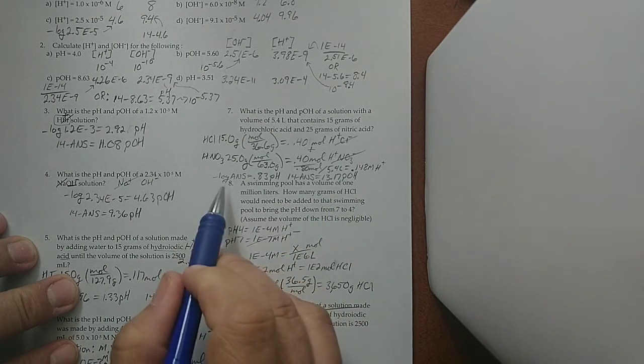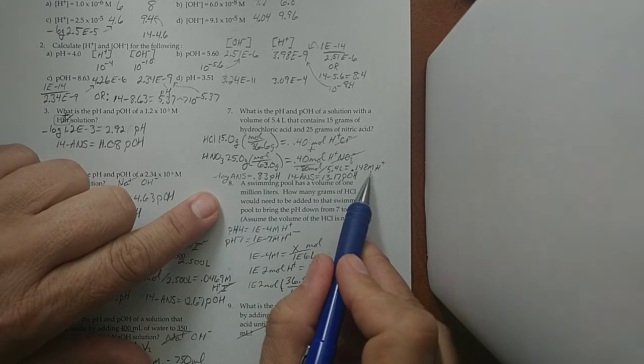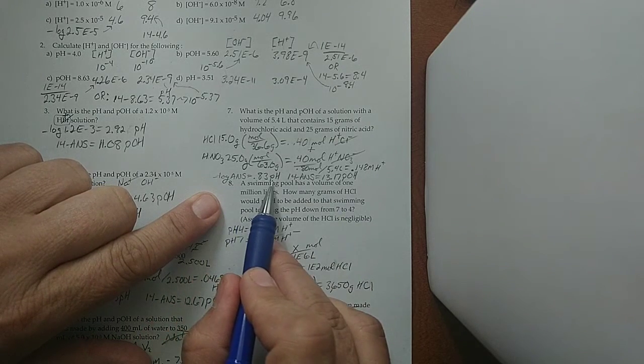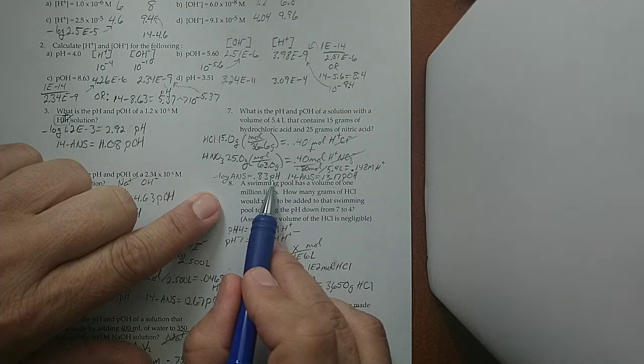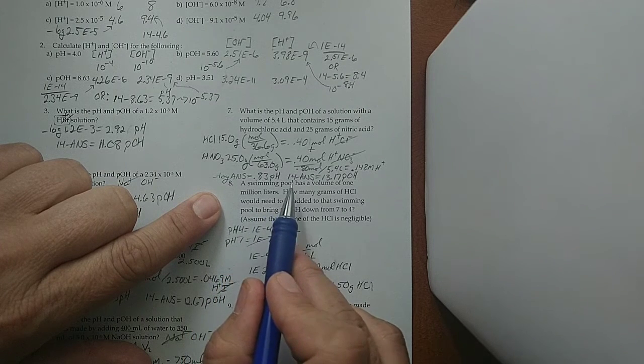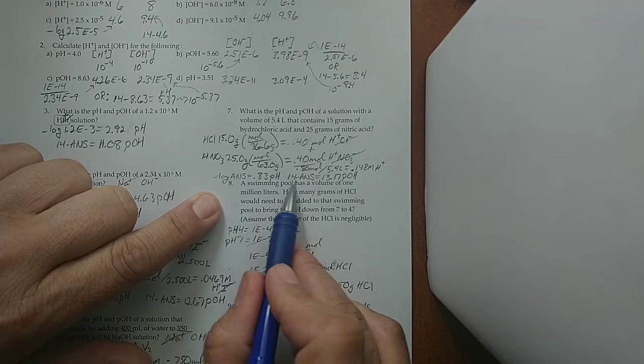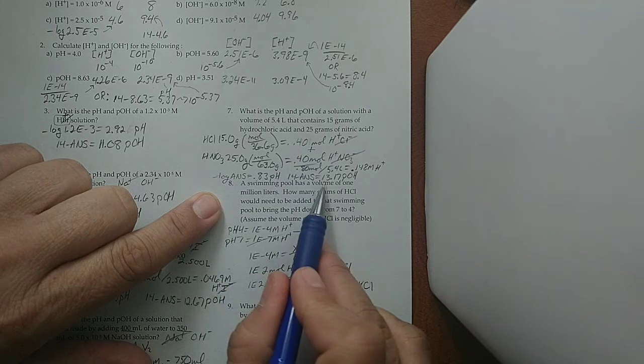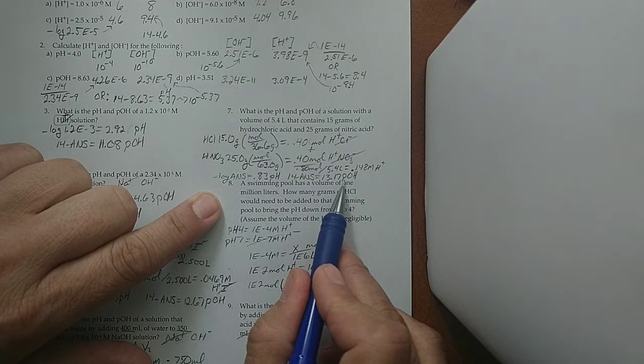To find pH, I take the negative log of the molarity answer, and that will give me pH. pH and pOH must add to 14, so 14 minus my previous answer will get me the other one, will get me pOH.